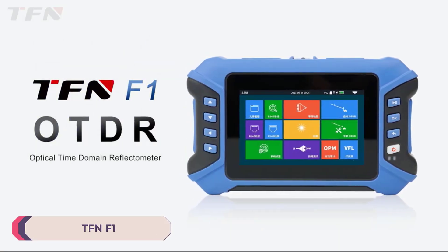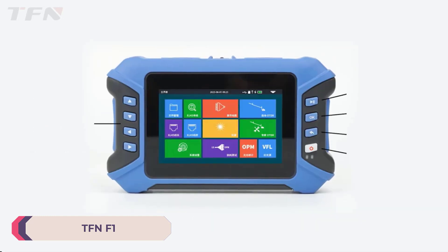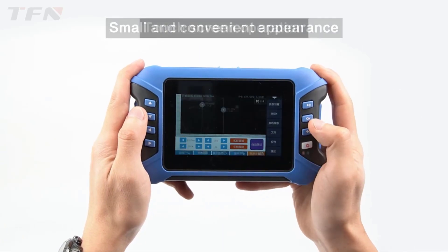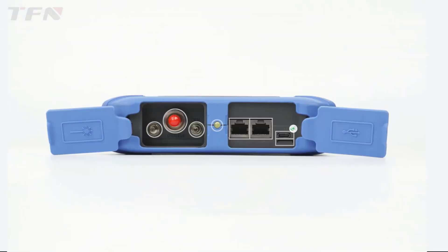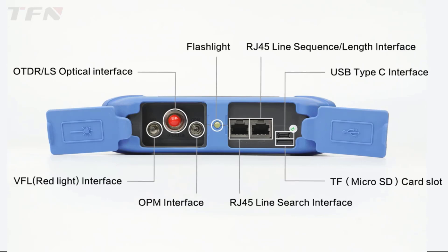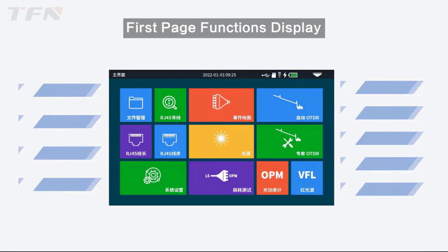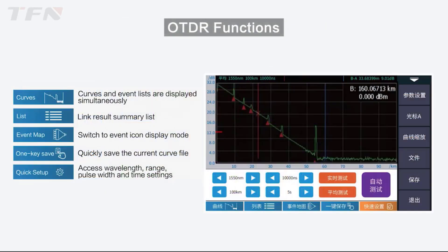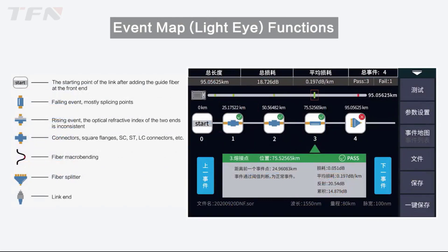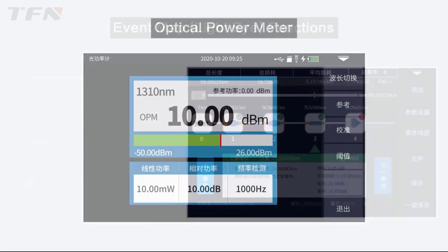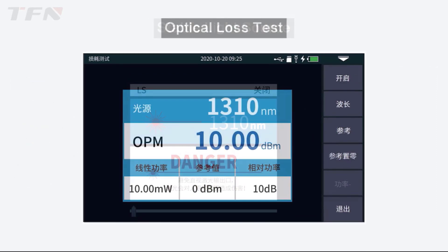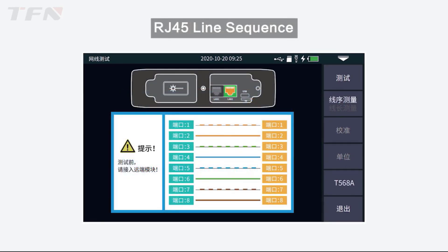Number 3: TFN-F1 OTDR Fiber Optic Tester. The TFN-F1 OTDR Fiber Optic Tester is a powerful and versatile tool for analyzing and troubleshooting fiber optic networks. With its compact size of 29 cm x 19 cm x 22 cm, it's convenient for fieldwork and fits easily into a technician's toolkit. It tests single-mode fibers commonly used in long-distance telecommunications, operating at key wavelengths of 1,310 nm and 1,550 nm, ensuring compatibility with various fiber optic systems.